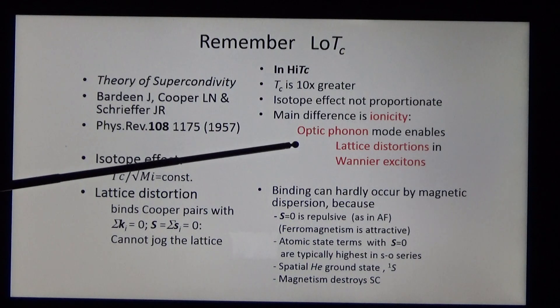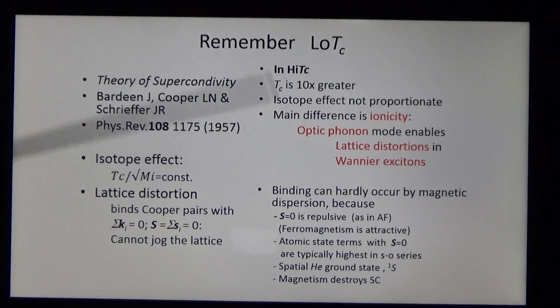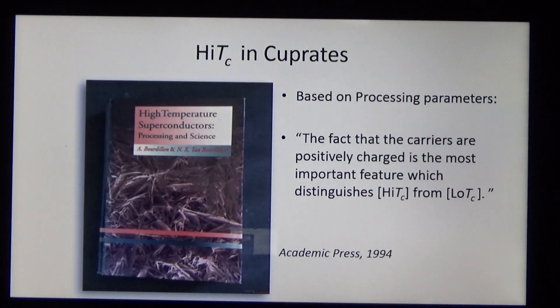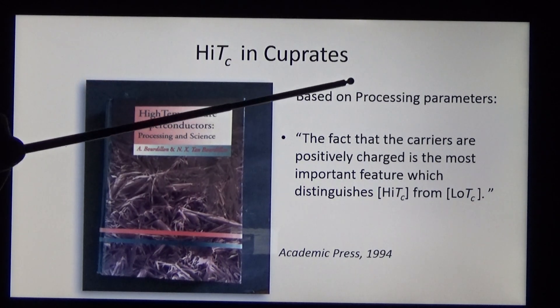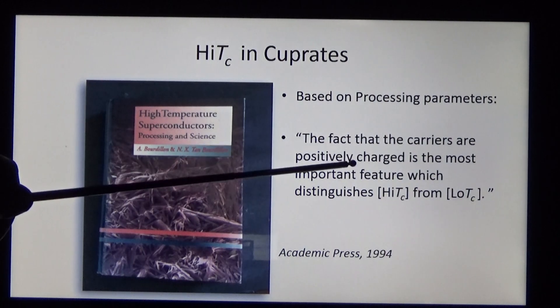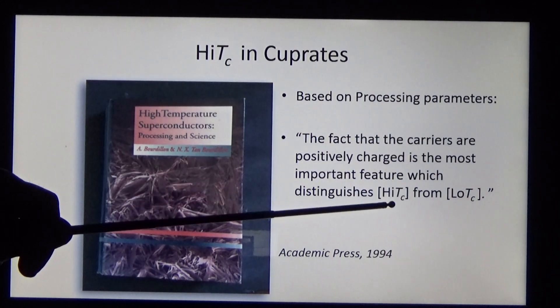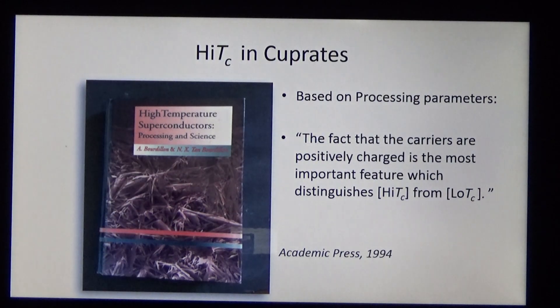Fast forward to 1994. Based on processing parameters, the fact that the carriers are positively charged is the most important feature which distinguishes high TC from low TC. Widely acknowledged but actually false, and we need dispersion dynamics to sort it out.